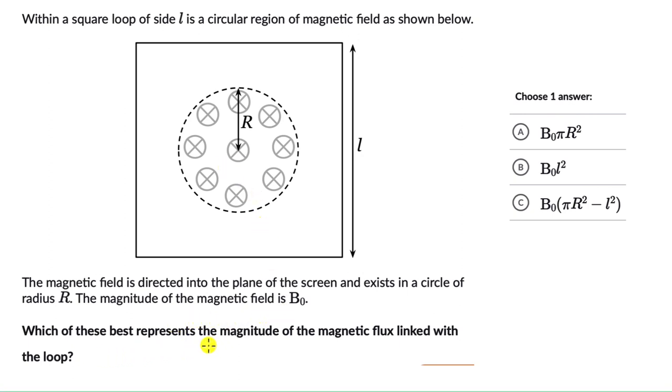Which of these best represents the magnitude of the magnetic flux linked with the loop? We can choose one answer out of these three. Okay, so let's think about it.